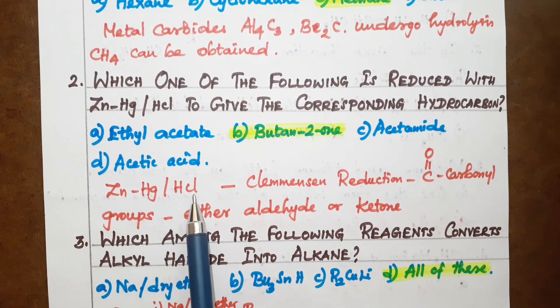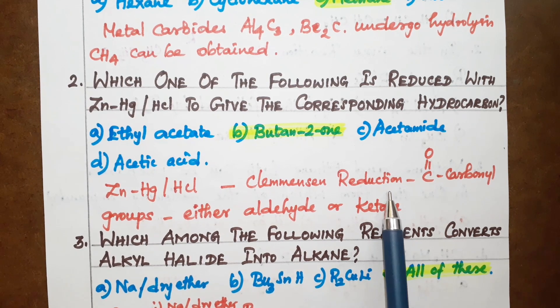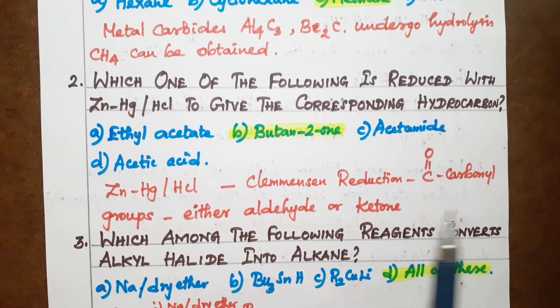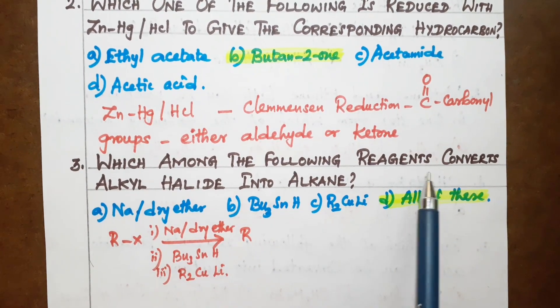Zinc amalgam and HCl is Clemmensen reduction. The C=O group is reduced. Third question: which among the following reagents converts alkyl halide into alkanes?